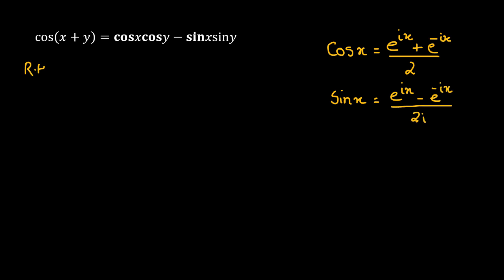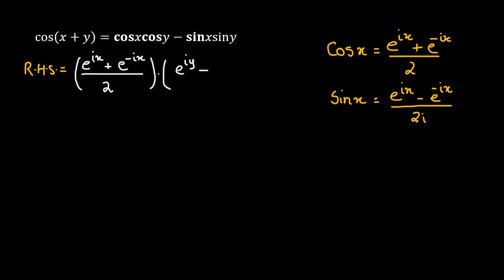We start from the right hand side. Cosine x gets replaced by e raised to the power of ix plus e raised to the power of negative ix, divided by 2, multiplied by the Euler's formula for cosine of y, which is e raised to the power of iy plus e raised to the power of negative iy, divided by 2.